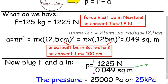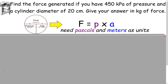Let's look at our next example: find the force generated if you have 450 kilopascals of pressure and a cylinder diameter of 20 centimeters, and give your answer in kilograms of force. So we need force — cover up force — and it tells us that we need pressure times area. Pressure times area uses pascals and meters as units.